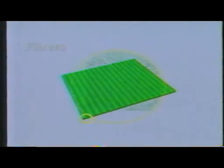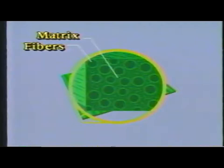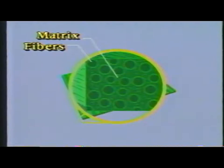It starts with the way composites are made. Fibers are embedded in a resin matrix. The matrix is relatively weak and serves primarily to bind the fibers together. These fibers give the material its strength, yet the fibers are also brittle.